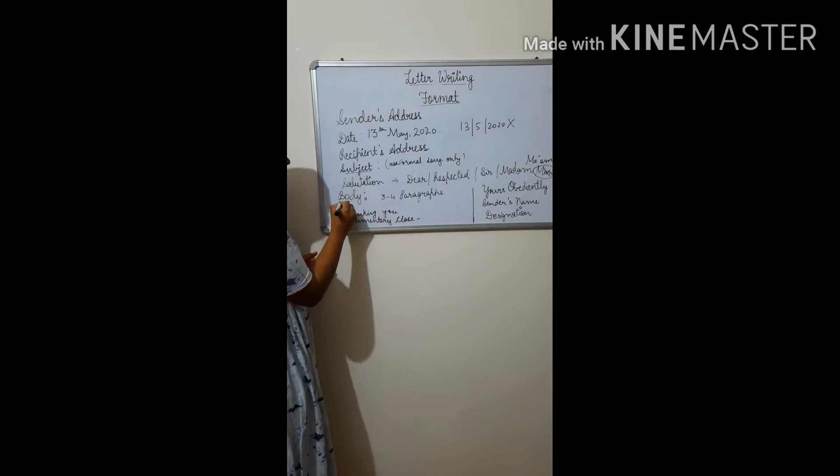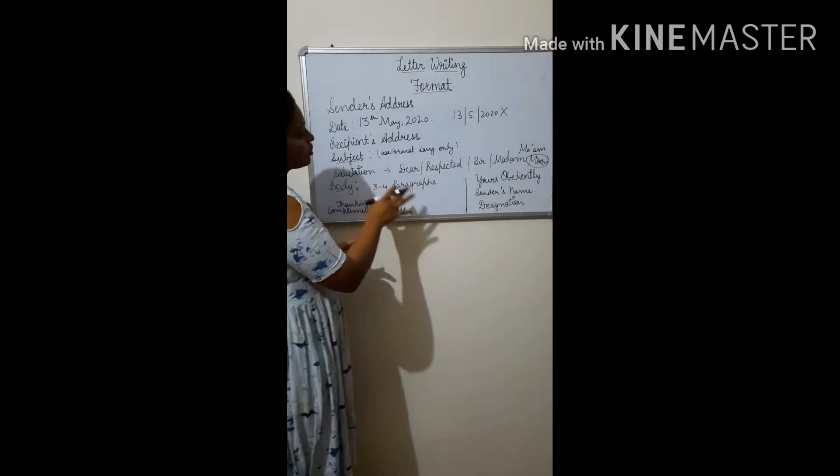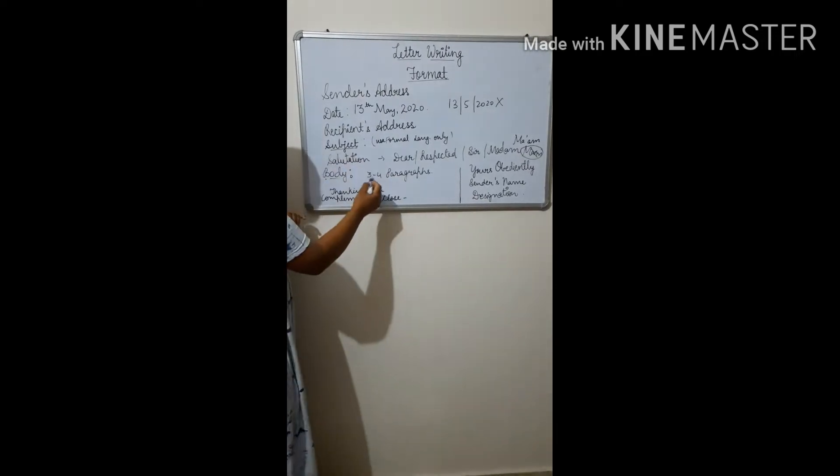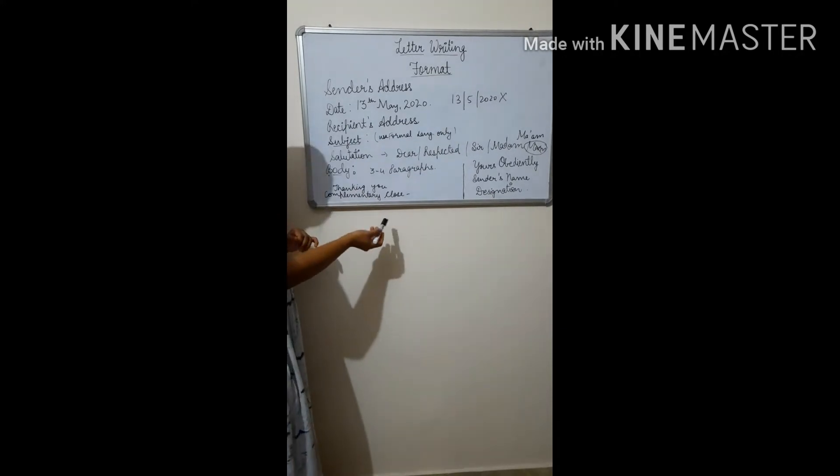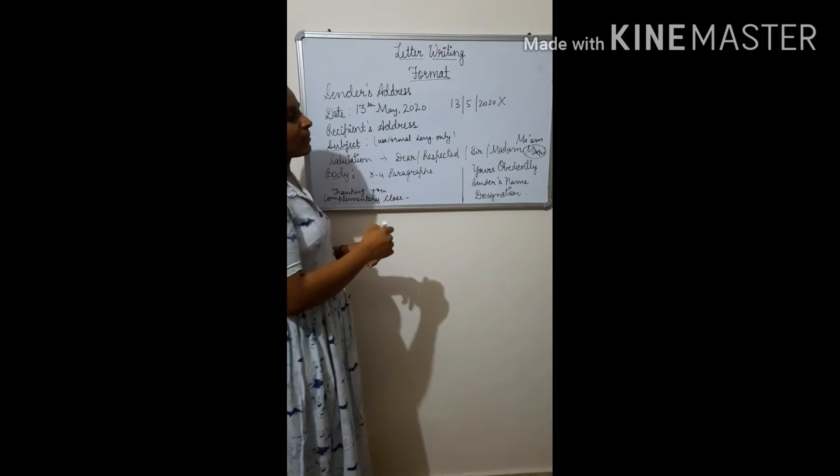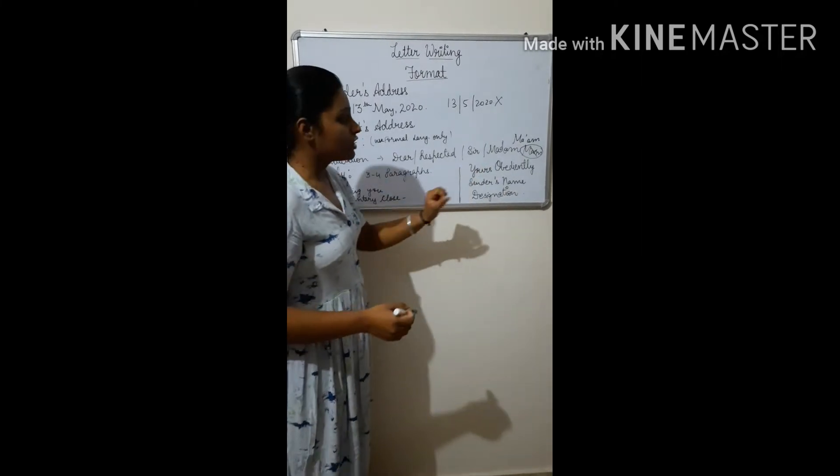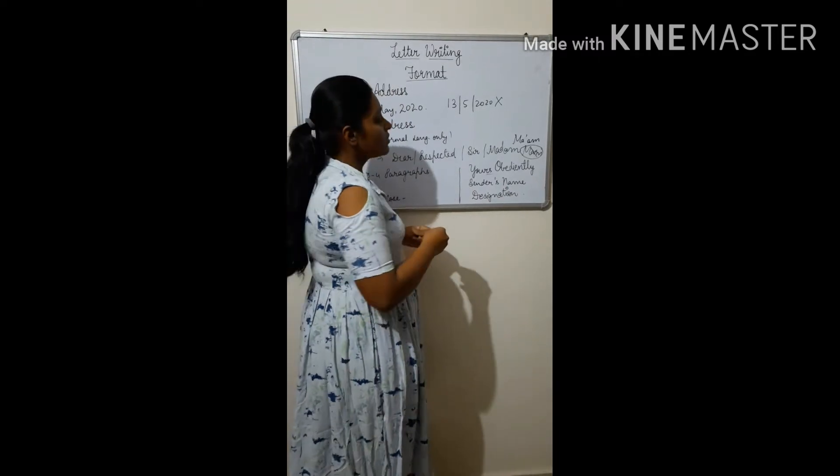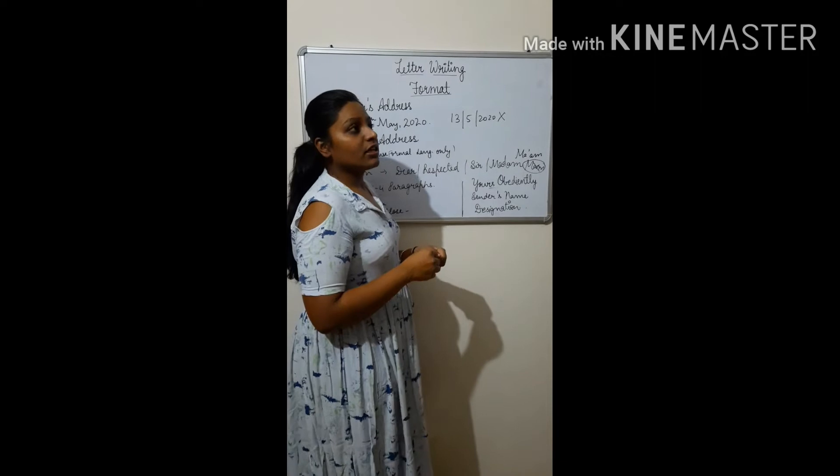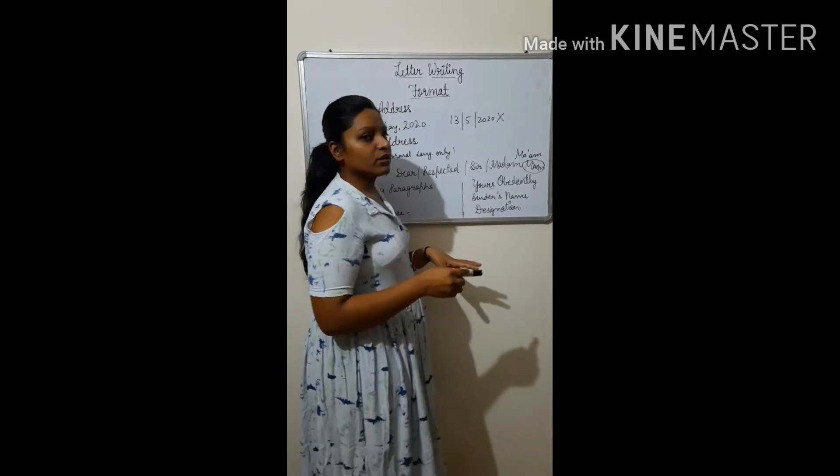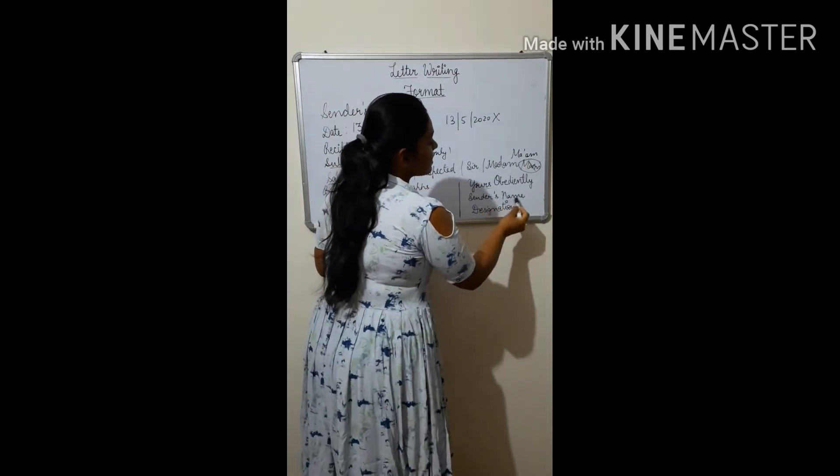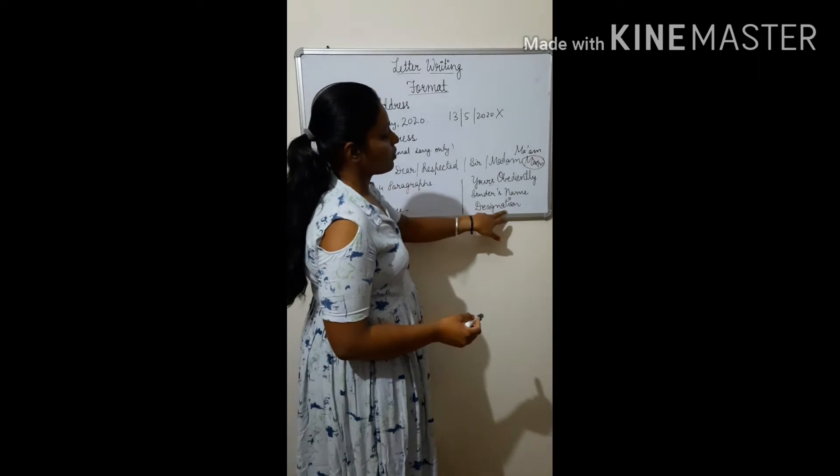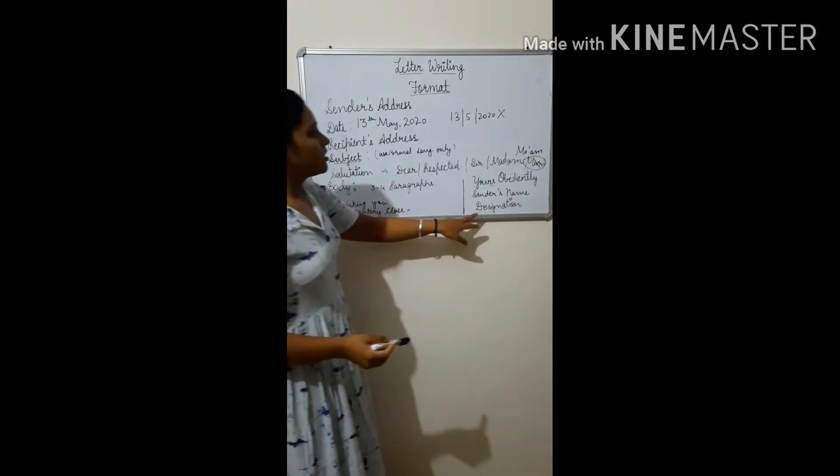Letter should be written in three to four paragraphs. After that, thanking you or thank you. And after that, complimentary close will come, for example yours obediently, yours sincerely, yours faithfully, yours truly. While we are writing letter to principal, we can often use yours obediently. While we are writing to editor, we can use yours sincerely or yours truly. So there are different words for different persons. After that, sender's name. The person who is sending letter, write name of that person. And if designation is given of that person, then you should also write her or his designation. So this is the basic format.